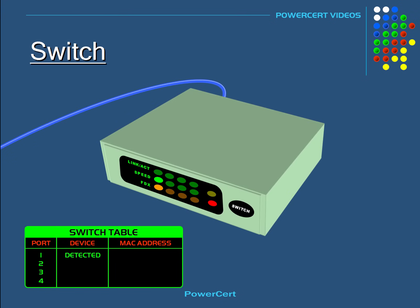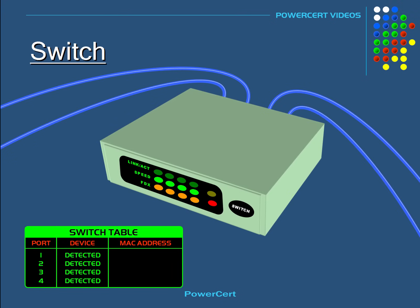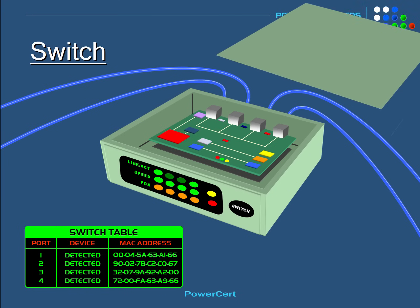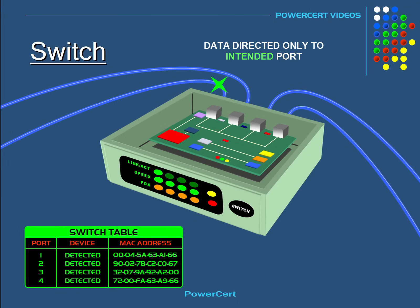Now a switch is very similar to a hub. It's also a device that has multiple ports that accepts ethernet connections from network devices. But unlike a hub, a switch is intelligent. A switch can actually learn the physical addresses of the devices that are connected to it, and it stores these physical addresses called MAC addresses in its table. So when a data packet is sent to a switch, it's only directed to the intended destination port, unlike a hub where it would just rebroadcast the data to every port.